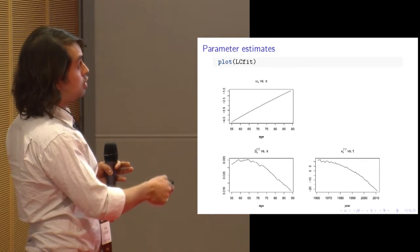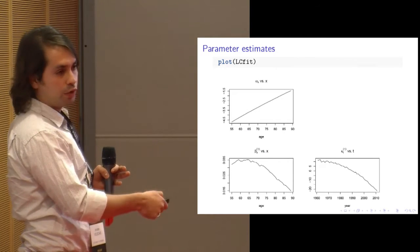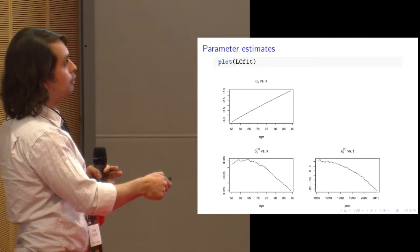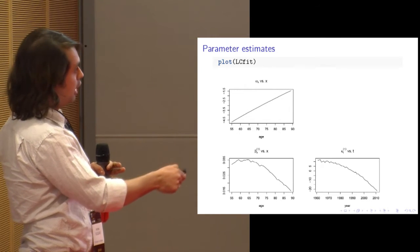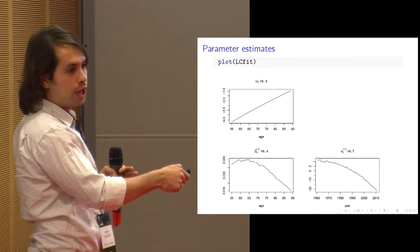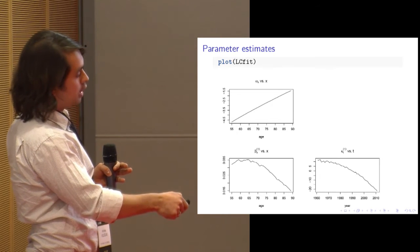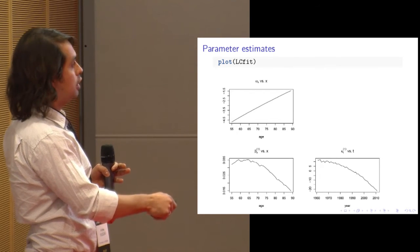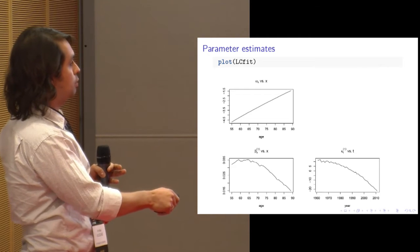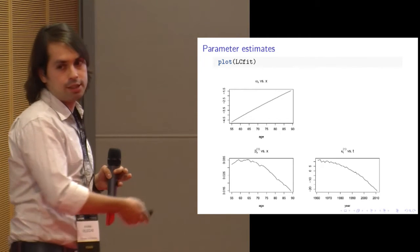After fitting, you can plot the parameters using the standard plot function. For the Lee-Carter model you see the typical behavior: a log-linear alpha-x over older ages, the declining kappa-t capturing mortality improvement, and the modulating beta-x showing that mortality has been declining faster around age 60.